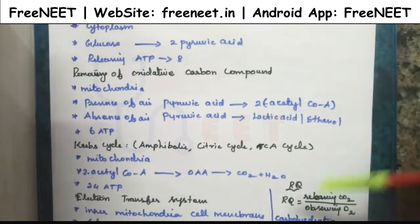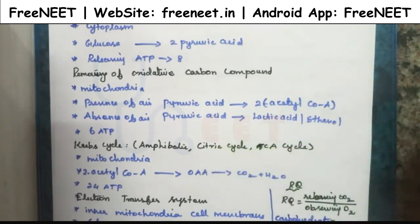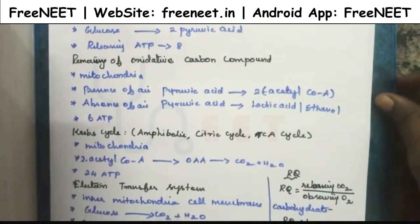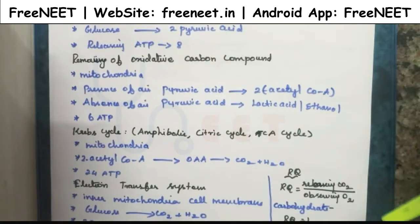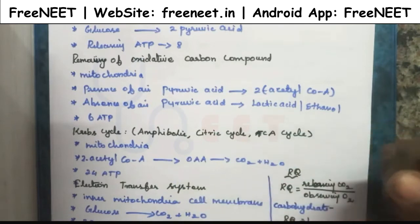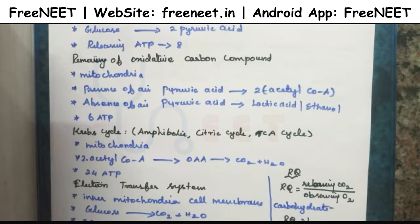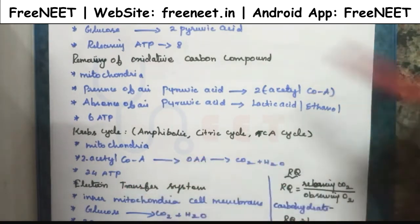Then the Krebs cycle. Another name for the Krebs cycle is the amphibolic cycle, citric acid cycle, or TCA cycle. TCA means tricarboxylic acid cycle. This process also takes place in the mitochondria. Here, two acetyl coenzyme A molecules are converted into carbon dioxide and water. Simply, glucose is converted into carbon dioxide plus water in the Krebs cycle. During the Krebs cycle, 24 ATP is released.